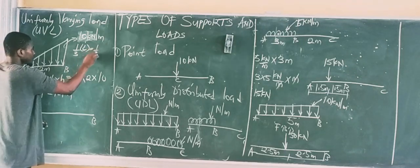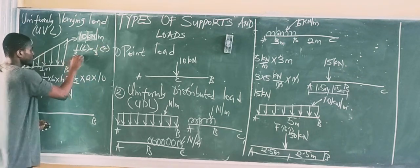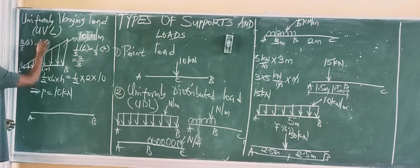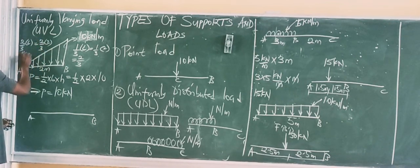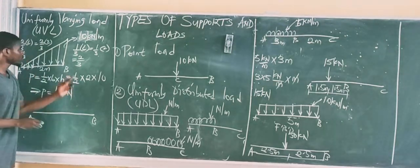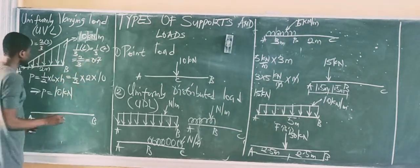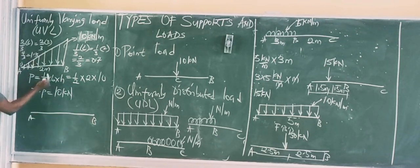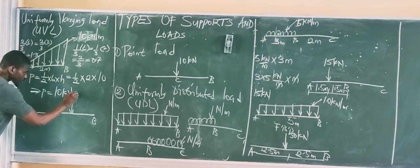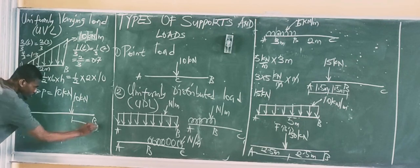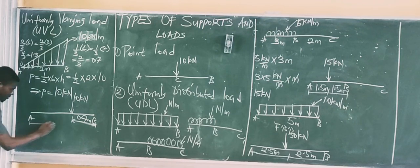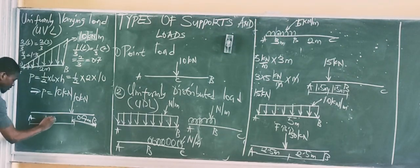So 2/3 is approximately 0.67 meters from the base, meaning the load is placed about 0.67 meters from point B and 1.33 meters from the tip. That is how you convert and position a UVL equivalent point load on a beam.